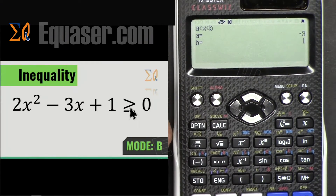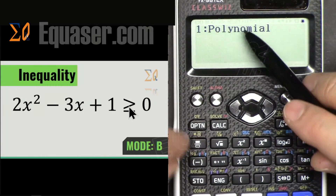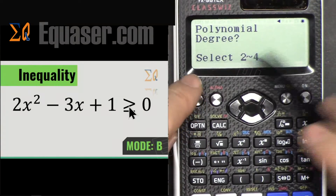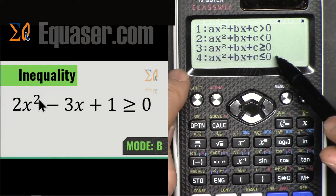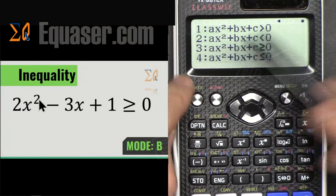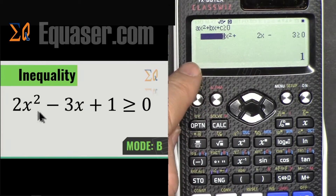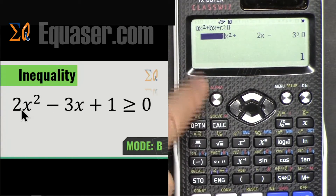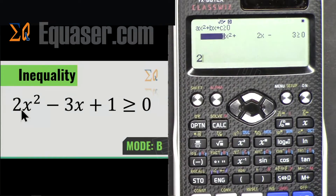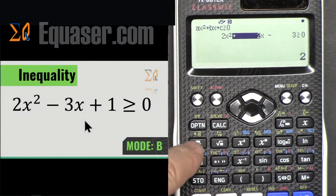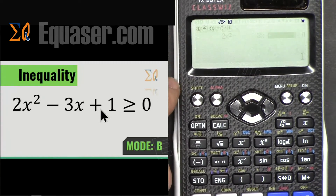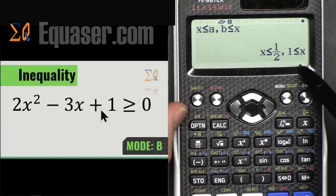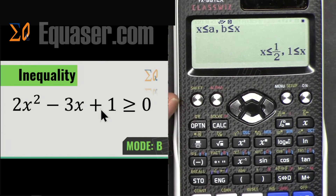Now let's look at a second inequality which has 'equal or greater than'. Press Option, go to 1 for polynomial, the degree is 2, and here we select option number 3. The coefficient of the first (highest) term is 2 — press equal — then minus 3, press equal, then press equal again, and then 1.